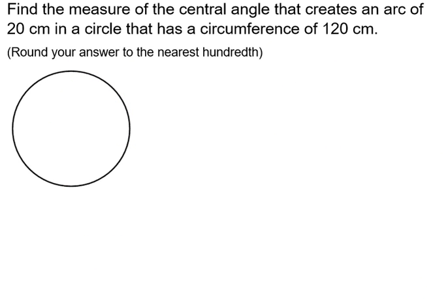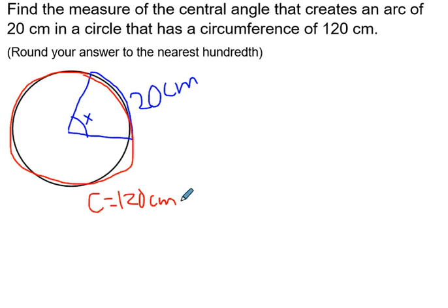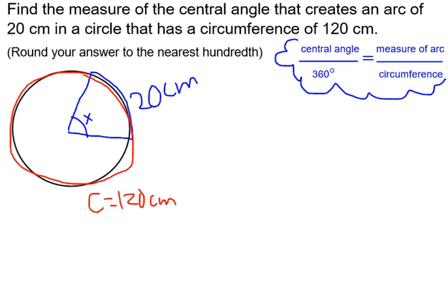Another type of problem: find the measure of the central angle that creates an arc of 20 centimeters in a circle that has a circumference of 120 centimeters. First, draw a picture. We're looking for the central angle, so I don't know how big it is. I know my arc is 20 centimeters. I'm looking for the central angle — that's my x. The whole circumference is 120 centimeters. I'm going to recopy our formula.